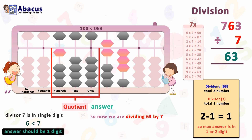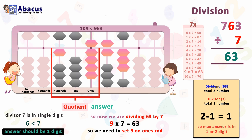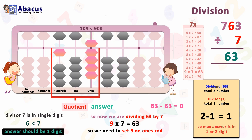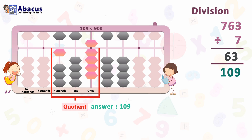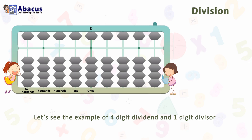In the table of 7: 9×7=63, which is exactly what we need. The answer is in single digit, so set 9 on the ones rod. Now subtract 63 from the right side: 63 minus 63 equals 0. We have completed all steps with zero remainder. We got the answer 109 on the left side. As per the rule, the quotient always completes on the unit rod. Let's reset the abacus and go to the next example.